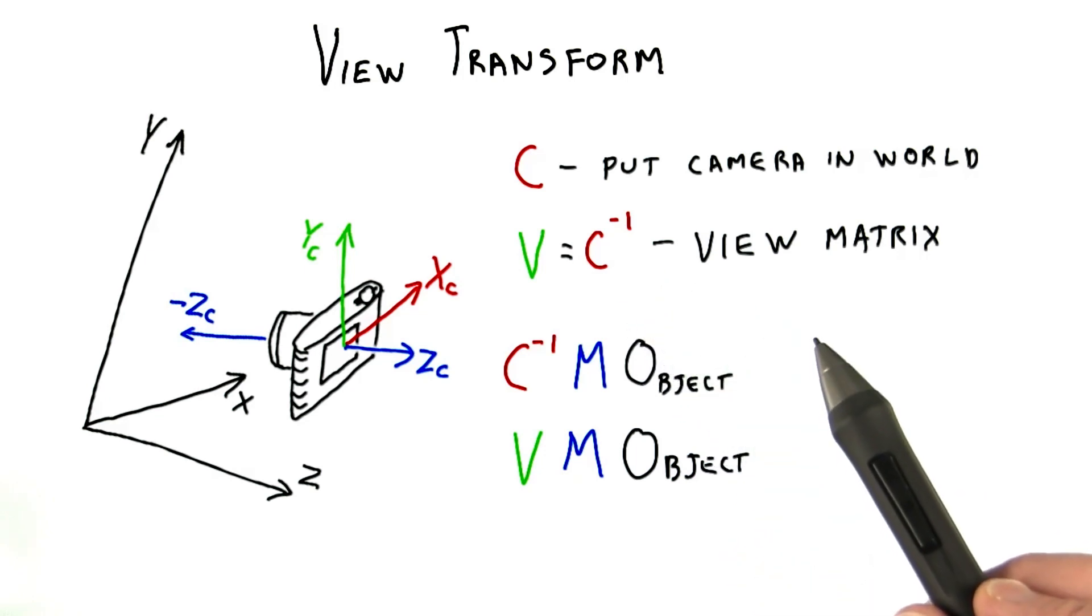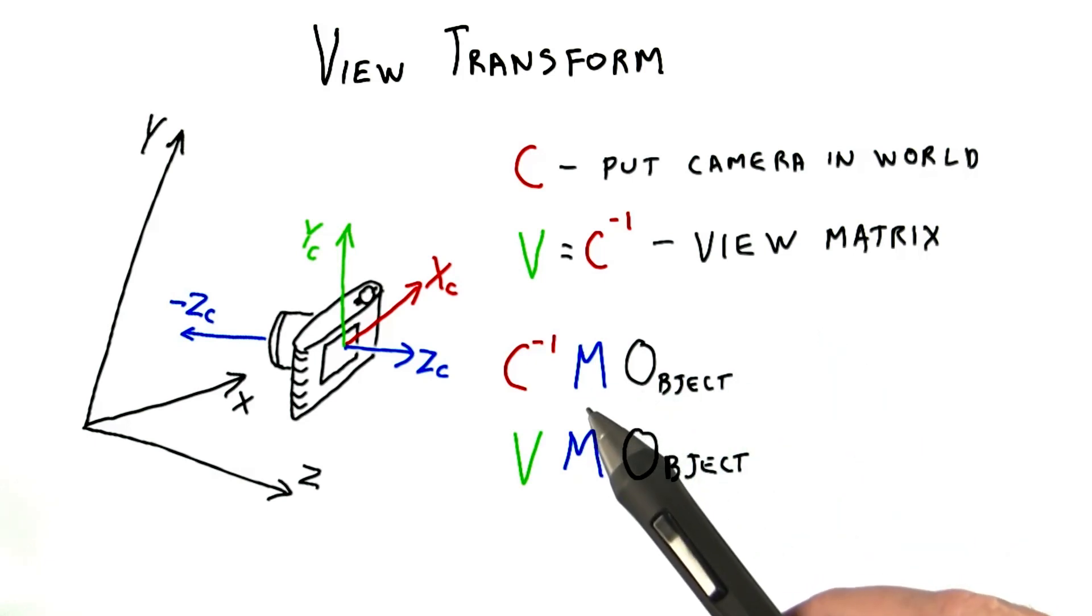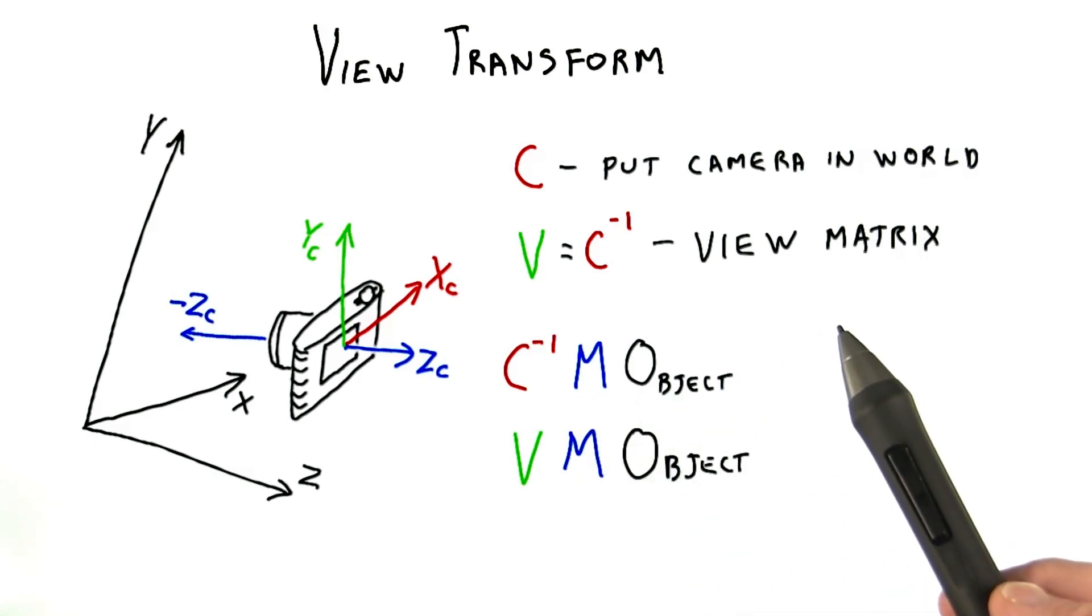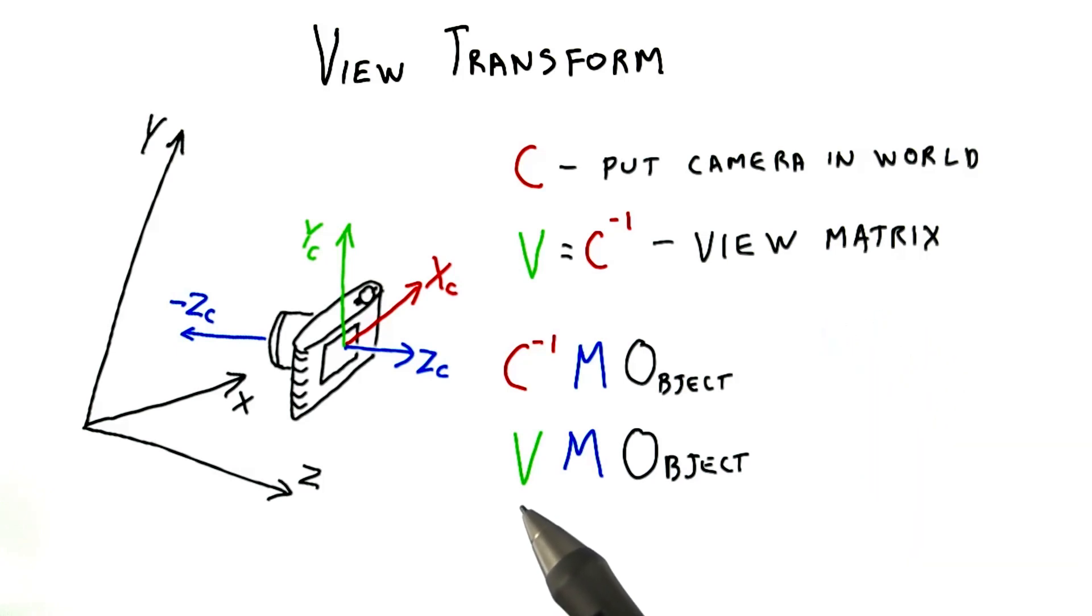Another way to think of this view transform is simply as the very last modeling matrix in the chain. The M matrix here represents all the transforms needed to get the object into world space. Modeling transforms. Now, one last transform, the view matrix V, takes the objects in world space and moves them into the camera's frame of reference.